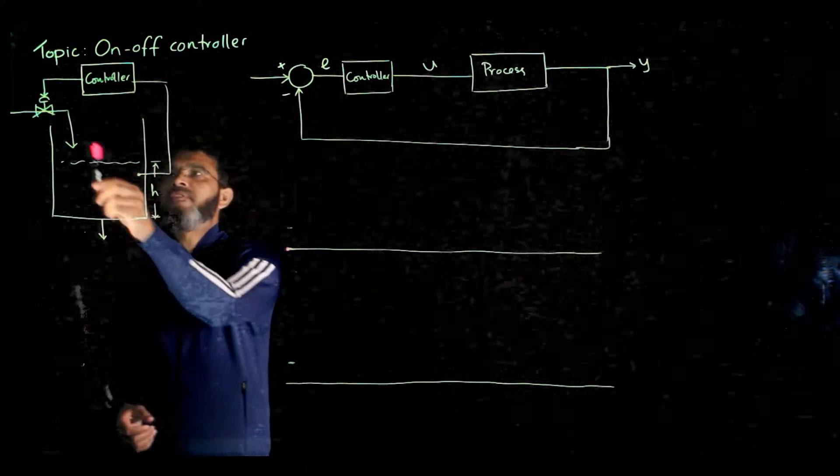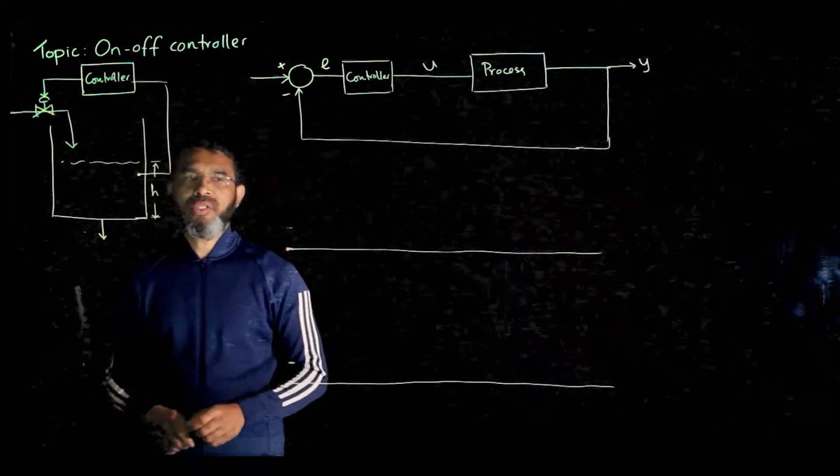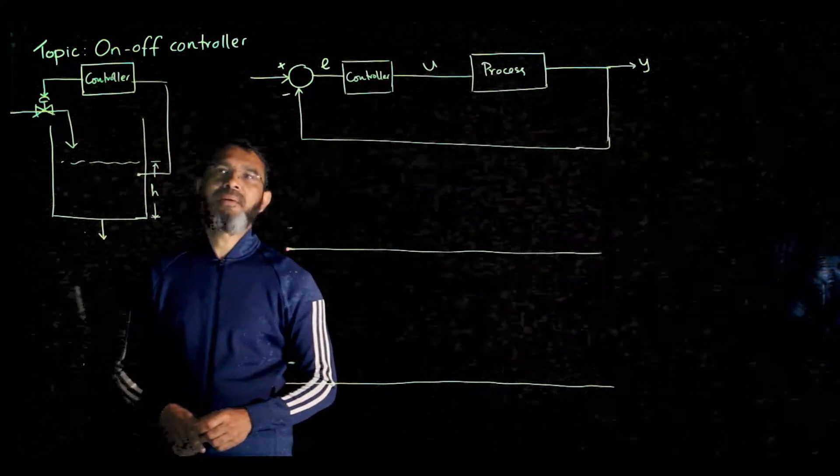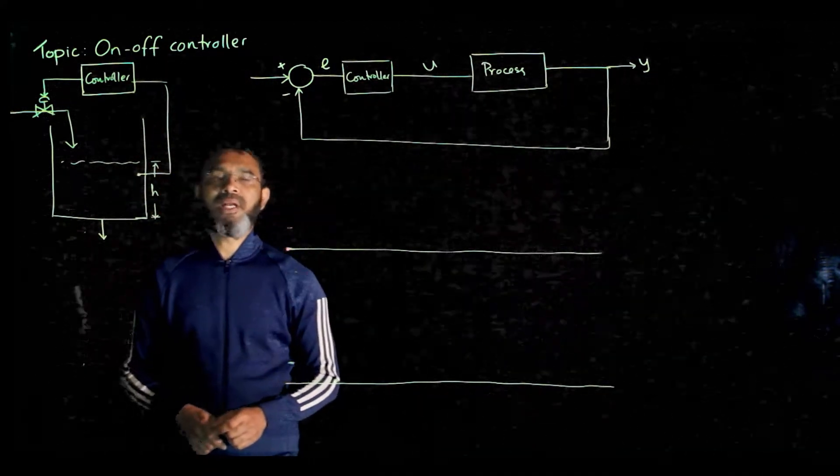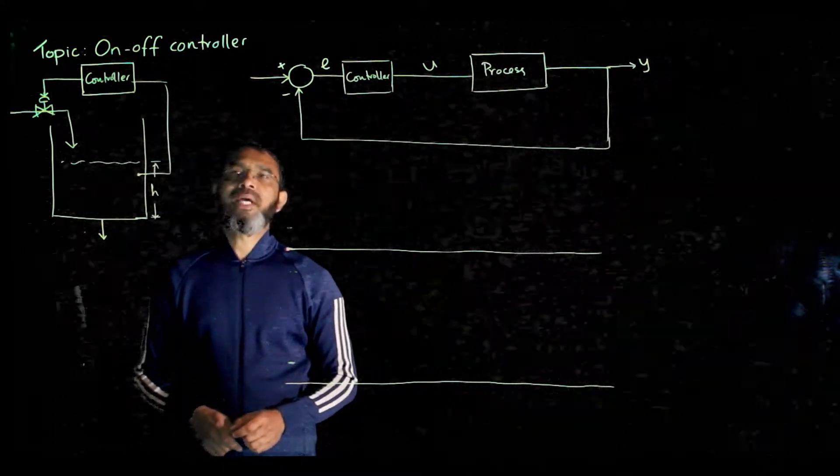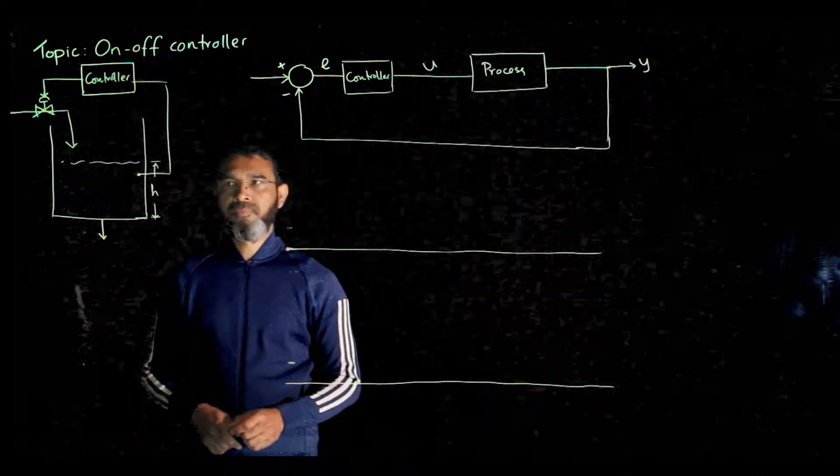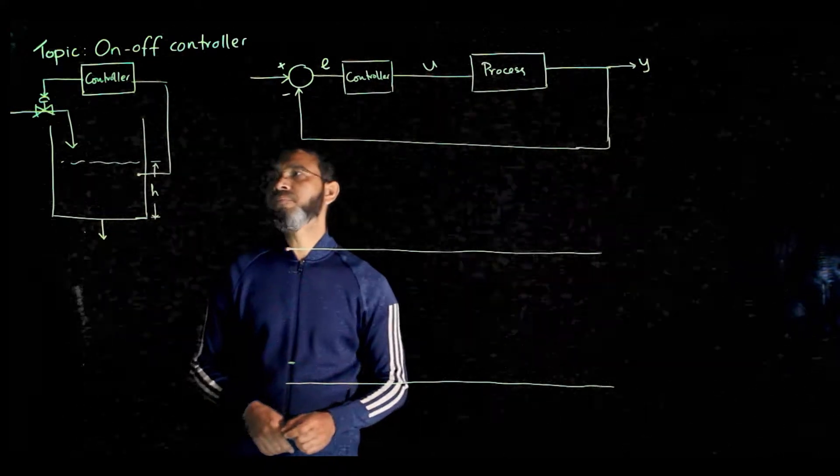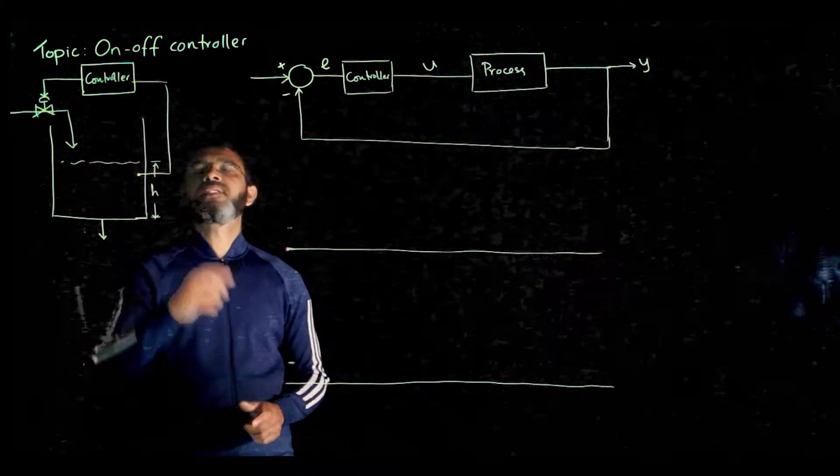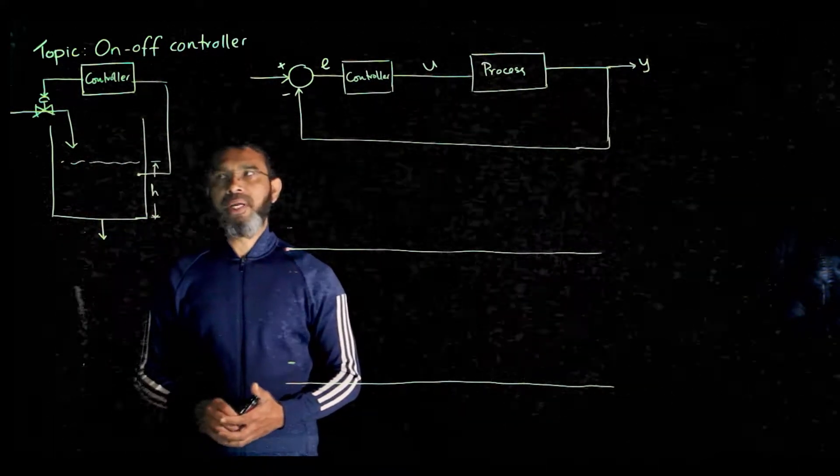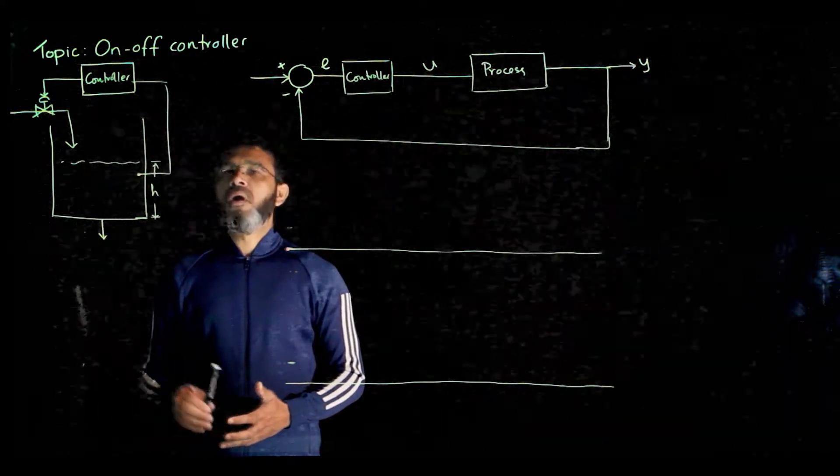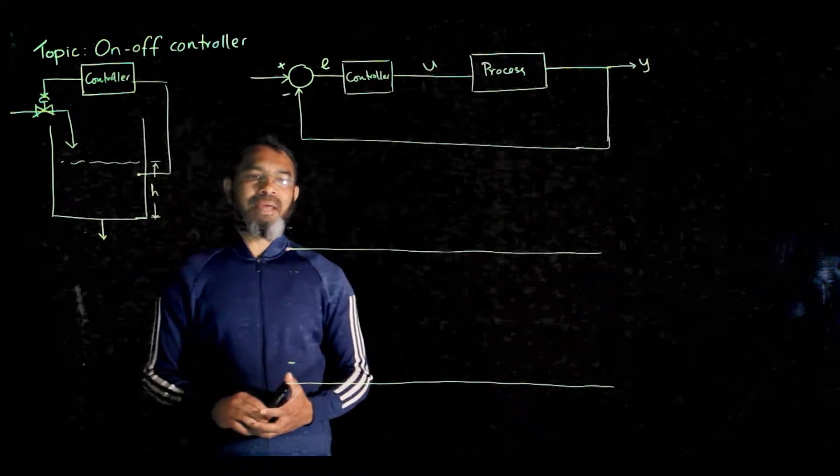You are using a valve that can have only two settings, meaning that either it can be turned on completely (100% open) or it can be turned off (zero percent open). Now in that case, how will this controller operate or how will the level be maintained?